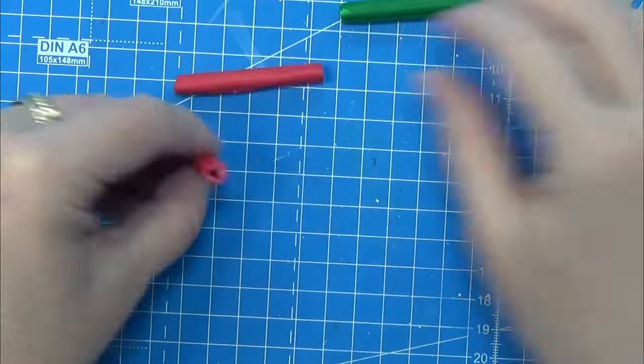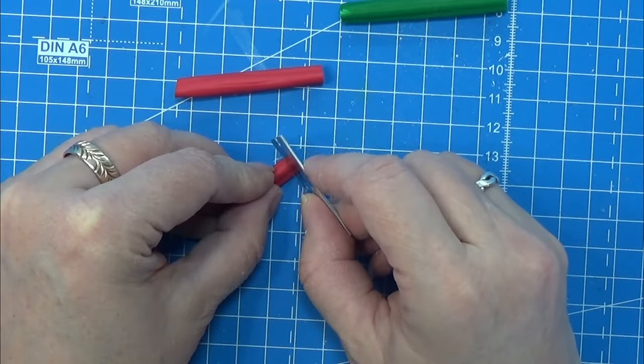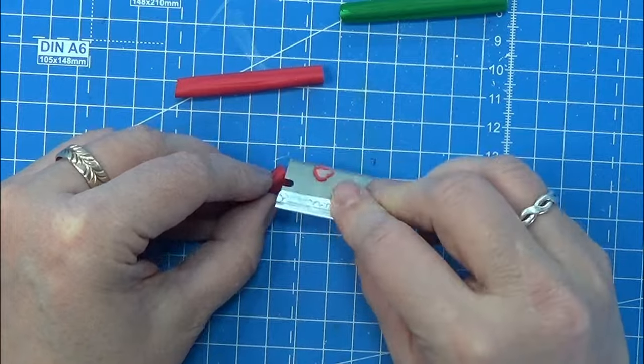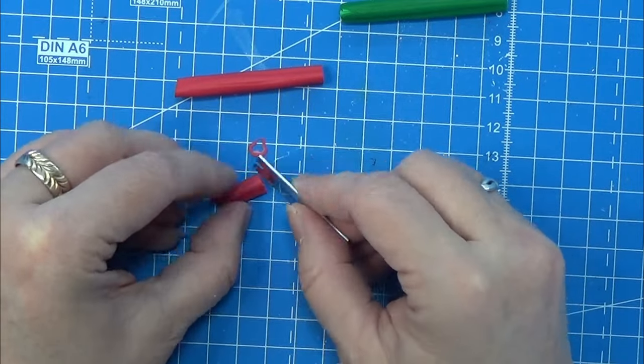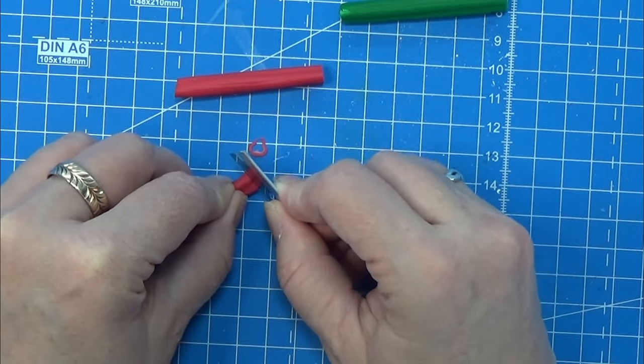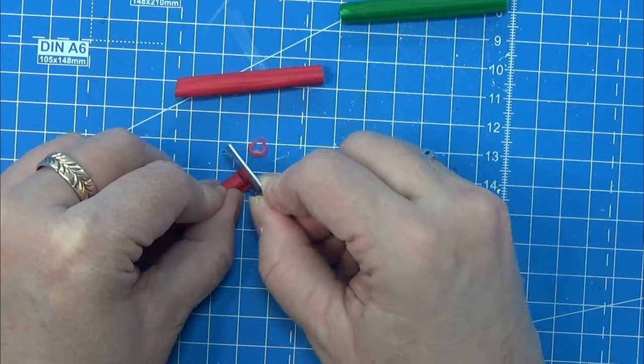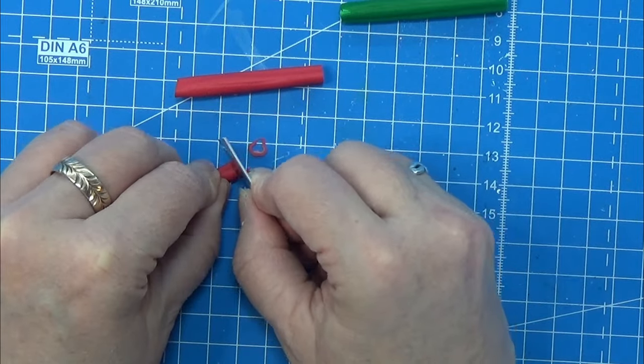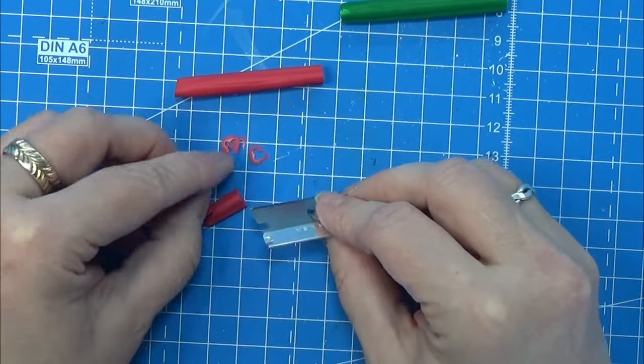And now you just need a sharp blade so that you can cut slices off here. Slice them as thin as possible. You can either do a whole slice of the cane or half slices of the cane.